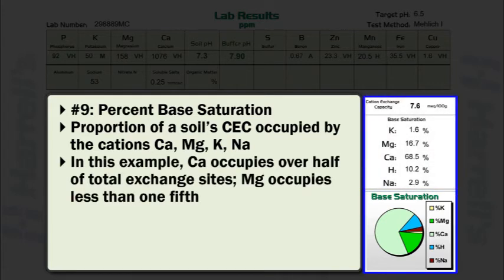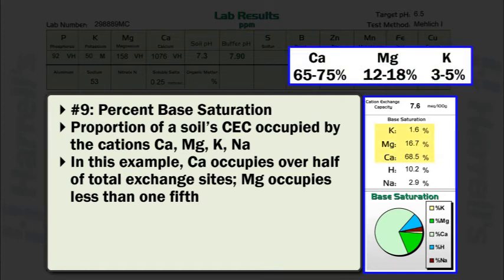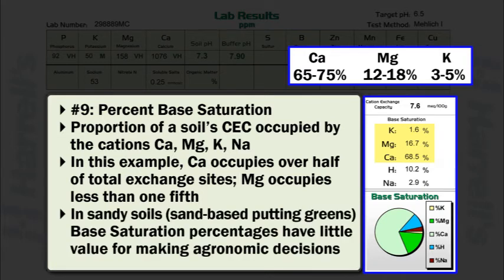In this example, calcium has a base saturation value of 68.5 percent and magnesium has a base saturation value of 16.7 percent. Therefore, calcium occupies half of the total exchange sites and magnesium occupies less than one-fifth of the total exchange sites. In general, the acceptable percent range for each base cation is 65 to 75 percent for calcium, 12 to 18 percent for magnesium, and 3 to 5 percent for potassium. With sandy soils such as a sand-based putting green, base saturation percentages have little value for making agronomic decisions, as sandy soils generally have very low cation exchange capacity.